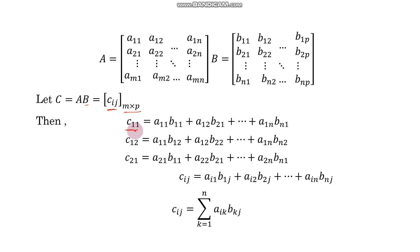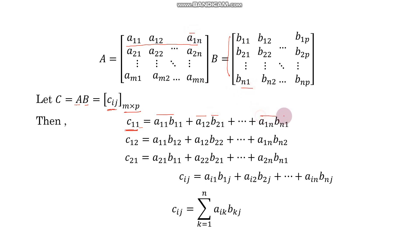For example, C11 means we multiply the first row of A with the first column of B: A11·B11 + A12·B21 + ... + A1N·BN1. For C12, we use the first row of A and the second column of B: A11·B12 + A12·B22 + ... + A1N·BN2. Similarly, C21 means the second row of A and the first column of B, giving the corresponding dot product expression.